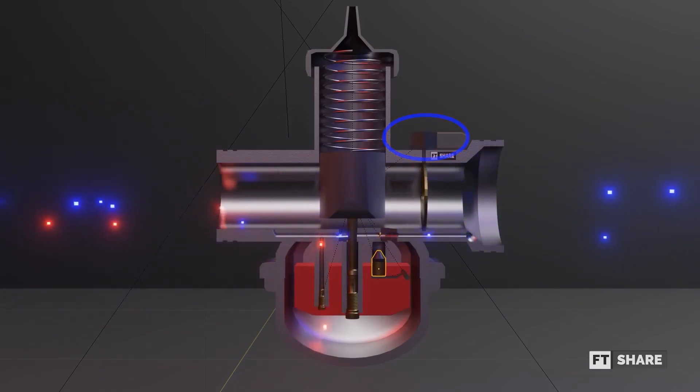As the name implies, this choke reduces the supply of air entering through the air intake and increases the air entering through the idle pipe. This creates greater turbulence in the floating chamber.